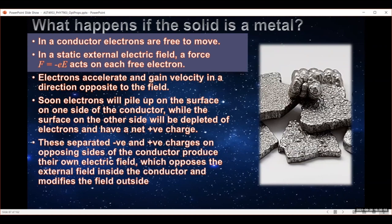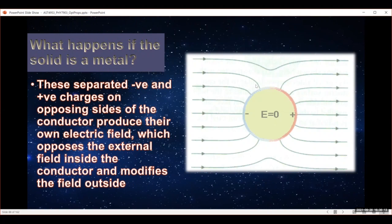Because we have those separated negative and positive charges, we've basically induced an electric field. So now we have an electric field that is opposing the external electric field, modifying what's going on inside. For a conductor — a metal — we've got electrons on one side and a net positive charge on the other from all the missing electrons. So our electric field goes to zero inside of the metal, which means we're not going to get the same sort of interaction as we do with dielectric materials.